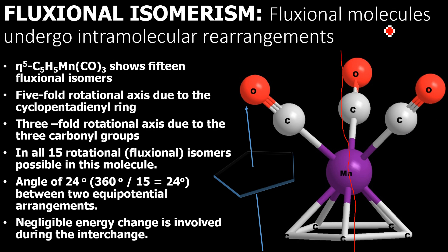In the same way, if you rotate the structure formed by the three carbon monoxide molecules around an axis passing through the centre, then during a rotation of 360 degrees, three times the configuration seen in the figure will be repeated. So a five-fold rotational axis is present due to the cyclopentadienyl ring, and a three-fold rotational axis is also present due to the three carbonyl groups. In all, 5 multiplied by 3 gives 15 rotational or fluxional isomers possible in this molecule.